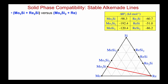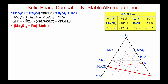Continuing up the diagram, let's look at the stability of Mo₃Si plus Re₂Si versus Re plus Mo₃Si₂. We represent our reaction and check which side is stable. In this case the enthalpy is negative, so the free energy is negative and the right-hand side is stable: Mo₃Si₂ plus Re is more stable than the other possibility. So we get rid of the other one, and this becomes a stable tie line.